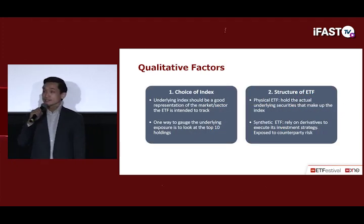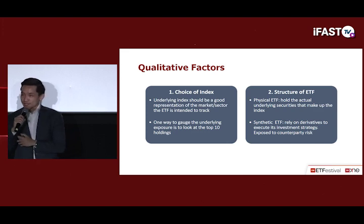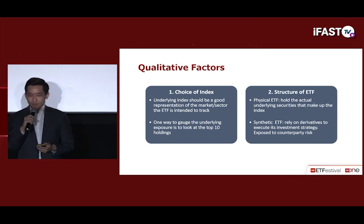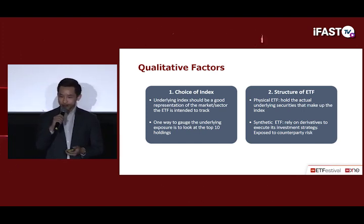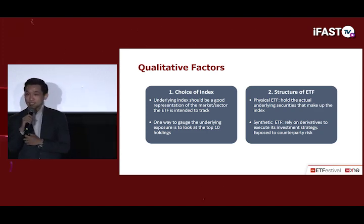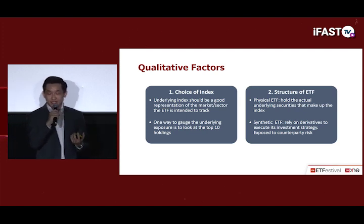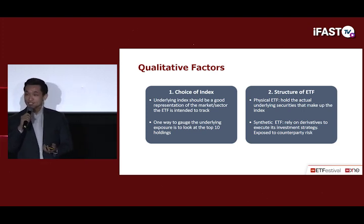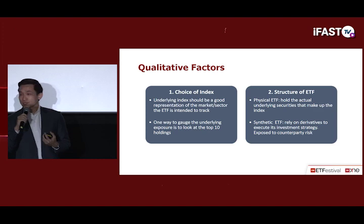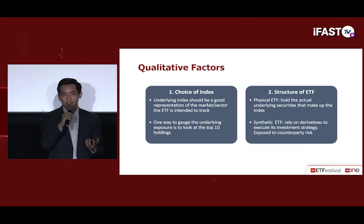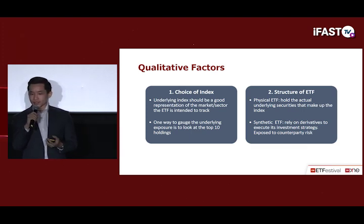After considering quantitative factors, we move on to qualitative factors: the choice of index and the structure of the ETF. For the choice of index, the underlying index must be a good representation of the market or sector the ETF intends to track. For example, if you want exposure to Chinese technology stocks, the Hang Seng Tech Index is more relevant than the general Hang Seng Index. One way to gauge underlying exposure is to look at the investment objective and the top ten holdings of the ETF.